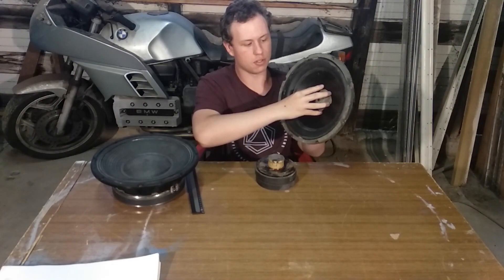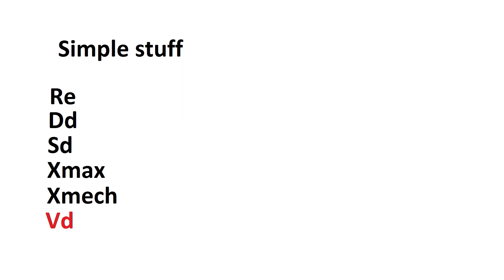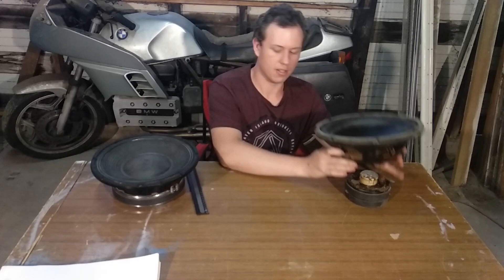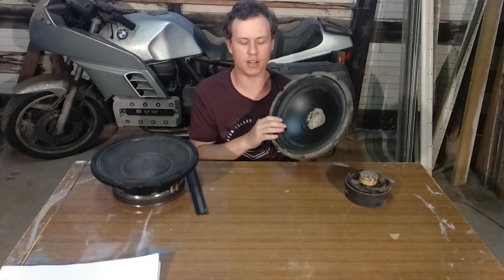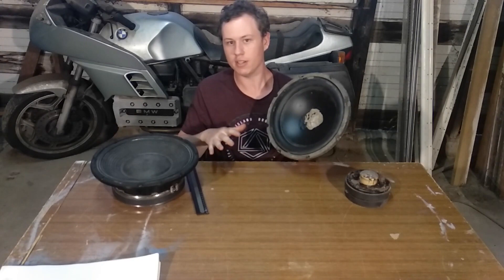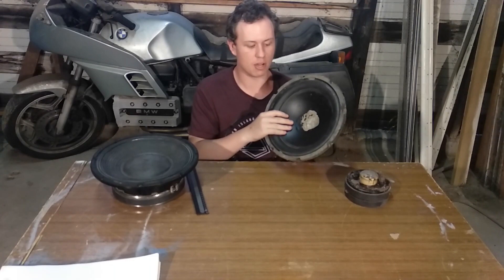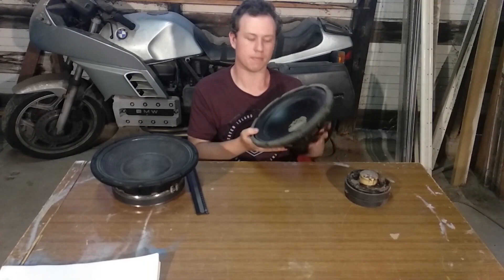Its X-Mech, however, could be closer to an inch. The final simple spec is the volume of displacement, VD, which is X-Max times the cone area. For this driver with an X-Max of 14mm and an area of 530 square centimeters, that's about 750 cubic centimeters or milliliters — so every time the cone moves at X-Max, it can move 0.75 liters of air.